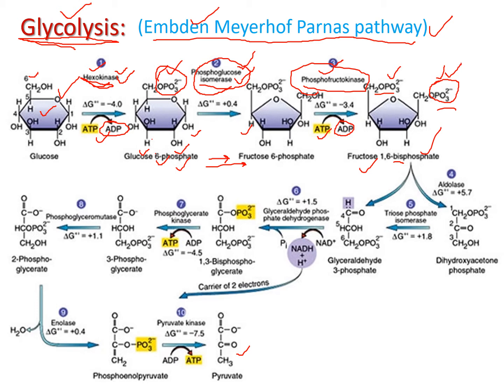Step four is a cleavage reaction. The six-carbon substrate fructose-1,6-bisphosphate is broken down into two three-carbon molecules: glyceraldehyde-3-phosphate (G3P) and dihydroxyacetone phosphate (DHAP). The enzyme responsible for this cleavage is aldolase.